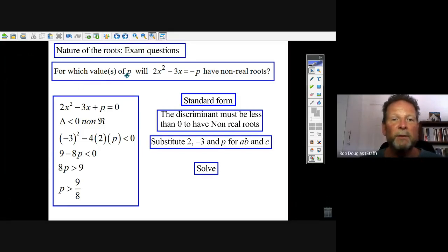For which values of p will 2x squared minus 3x equals negative p have non-real roots? Well, we've got to put this in standard form if we're going to look at the quadratic expression. So we have to make this minus p, add p to both sides. There it is, 2x squared minus 3x plus p equals zero.